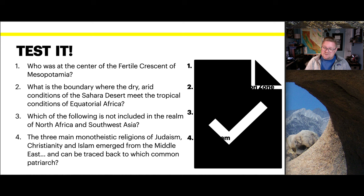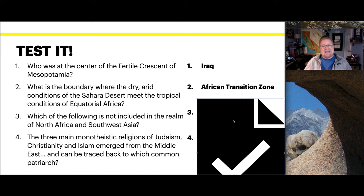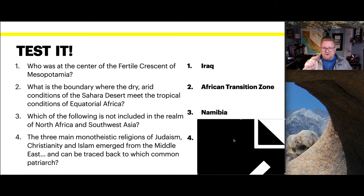The answers: Who's at the center of the Fertile Crescent? Iraq. What is the boundary where the arid Sahara Desert meets equatorial Africa's tropical conditions? The African Transition Zone. Which of the following is not included in the realm? Namibia. And the three main monotheistic religions all trace back to Abraham.